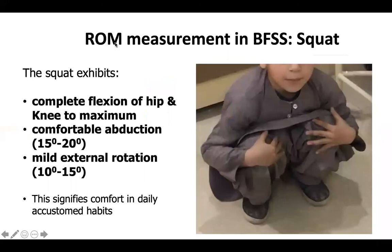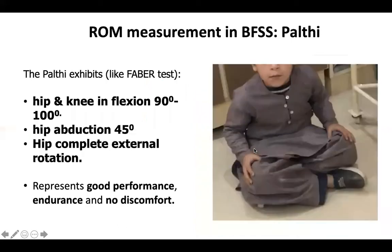The range of motion measurement in Bhatti score: in squat, it shows complete flexion of the hip and the knee to a maximum, comfortable abduction of 15 to 20 degrees, and mild external rotation of 10 to 15 degrees. In palti, just like the FABER test, the hip and knee are able to flex 90 to 100 degrees, hip abduction 45 degrees, and complete external rotation at the hip is possible.